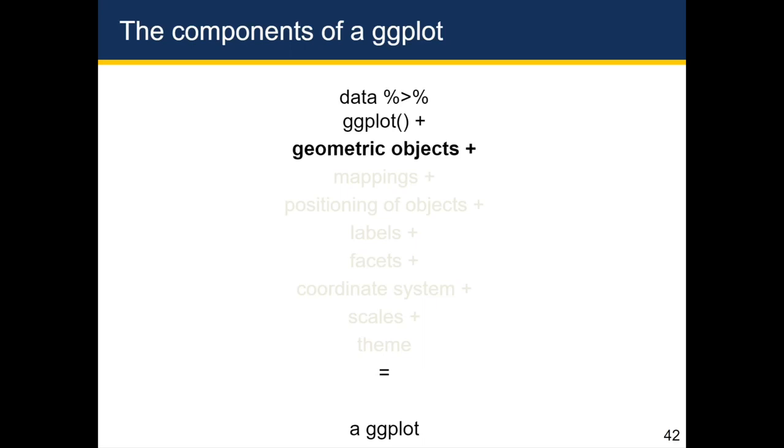Now that we've walked through a few examples of a ggplot, let's take a look at the individual components. Remember that we always start with the data, we pipe it into ggplot, and inside of the ggplot function we might specify our mappings. But the first thing we usually add to that with a plus sign is a geometric object.